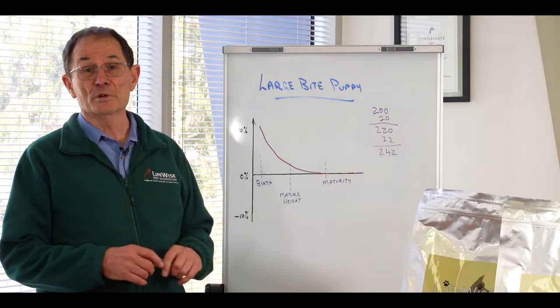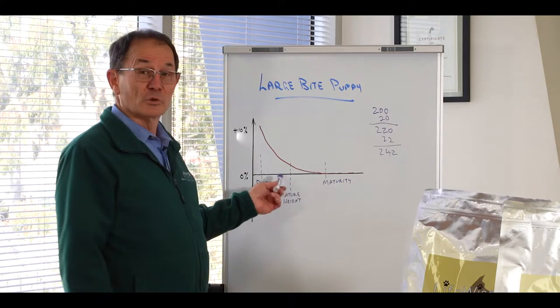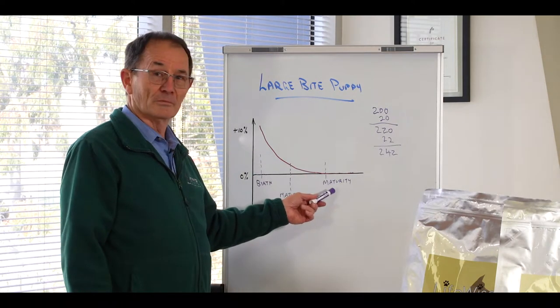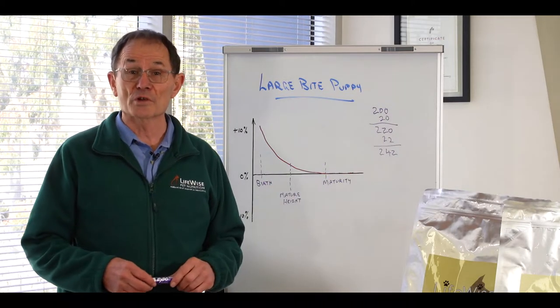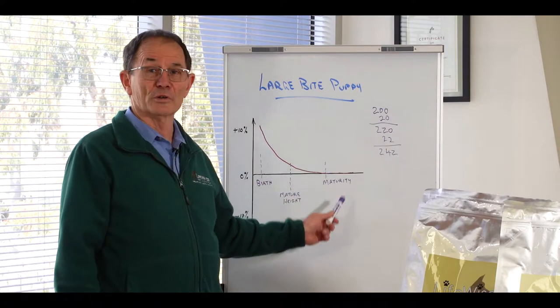But if we're talking about a large breed dog like a German Shepherd he might not get to mature height until he's 12 months of age and by that stage he's not going to reach maturity until he's about two years old and so we'd want to feed him as a puppy right through to that point in time.